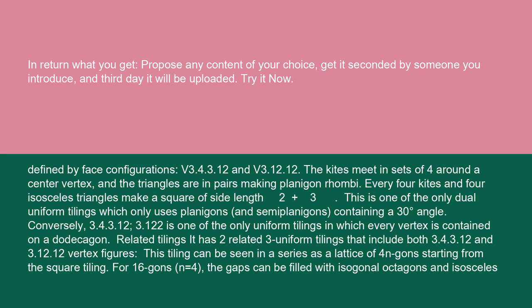Conversely, 3.4.3.12 / 3.12.12 is one of the only uniform tilings in which every vertex is contained on a dodecagon. Related tilings: it has two related three-uniform tilings that include both 3.4.3.12 and 3.12.12 vertex figures. This tiling can be seen in a series as a lattice of 4n-gons starting from the square tiling, with 4.16-gons at n equals 4. The gaps can be filled with isogonal octagons and isosceles triangles.